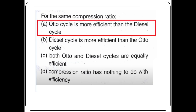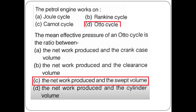For the same compression ratio, the Otto cycle engine is more efficient than the diesel cycle. The mean effective pressure of an Otto cycle is the ratio between the net work produced and the swept volume.